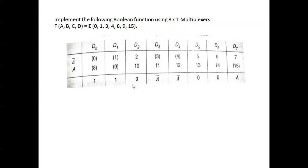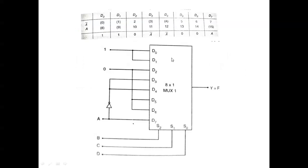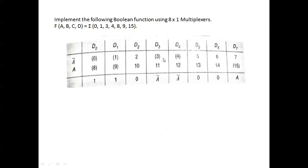The 4-variable Boolean function is given with minterms 0, 1, 3, 4, 8, 9, 10. First, draw the table with D0 up to D7. For 4 variables A, B, C, D, the minterms range from 0 to 15. We are implementing it using an 8-to-1 MUX, which has 8 inputs and 1 output.